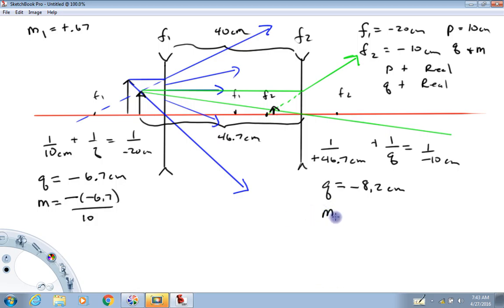Negative 8.2 centimeters, which looks fairly consistent with our expectations. Remember that focal length number two is minus 10, so this distance is 10. That looks like about eight, spot on. Magnification number two, magnification for the second lens is going to be minus Q, which is 8.2 centimeters, over P, which was 46.7 centimeters. This comes out to be positive, positive 0.18. And again this looks consistent with expectations because this object looks considerably smaller than this one.